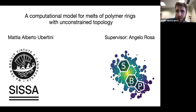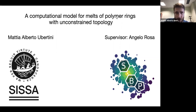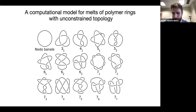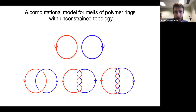The work deals with melts of polymer rings — that means solutions of identical polymer rings. With unconstrained topology, the polymers can be knotted or unknotted, and their topology can change over time. Regarding a couple of rings, they can be either unlinked or linked with different kinds of complexity.